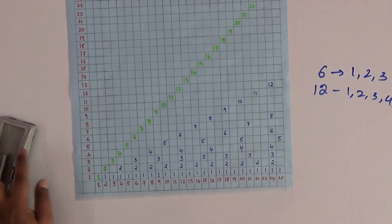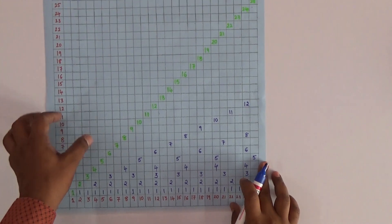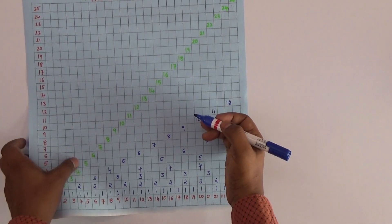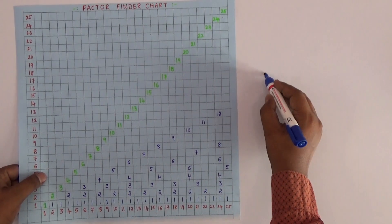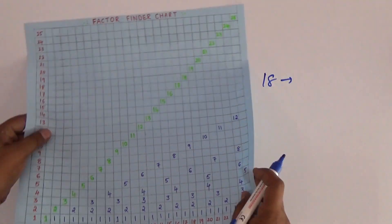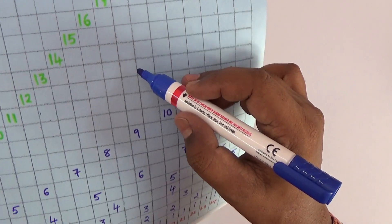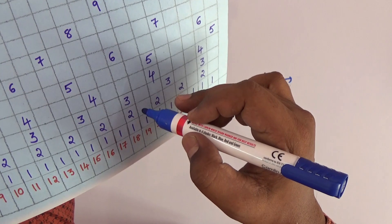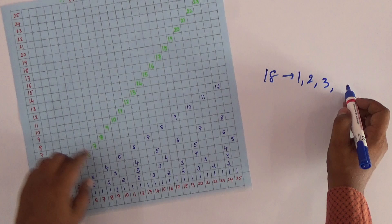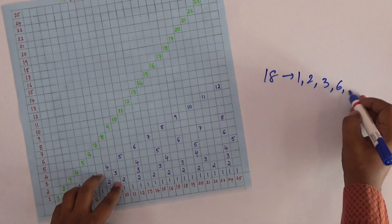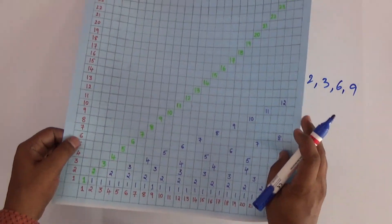Similarly for any number, we look at that particular column's straight line. For example, take 18 — the straight column of 18 gives us 9, 6, 3, 2, and 1. So you can verify the factors of 18 straight from the chart. The factors of 18 are 1, 2, 3, 6, and 9.